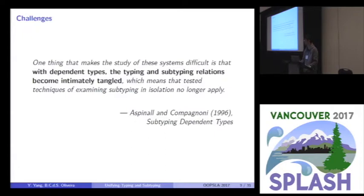However, it is challenging to combine dependent types with subtyping. I would like to quote the sentences from the paper, subtyping dependent types. One thing that makes the study of these systems difficult is that if you have dependent types, the subtyping and typing relations become intimately tangled. Which means the previous well-tested techniques of examining subtyping isolation no longer apply.